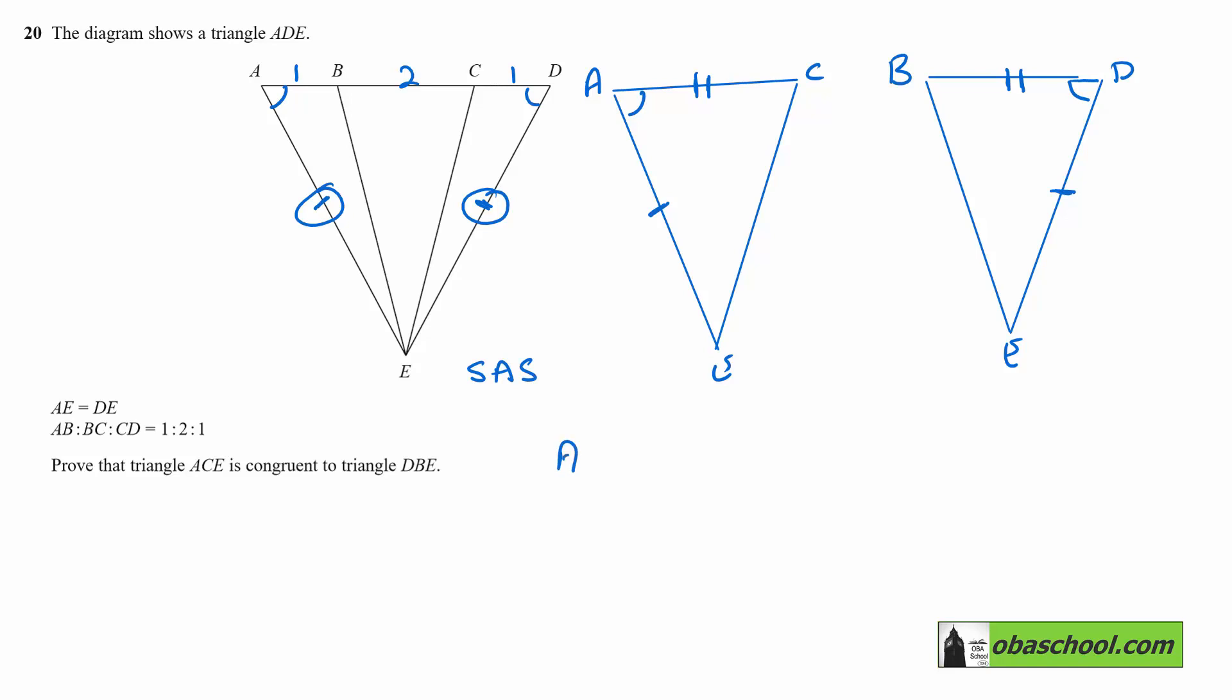So we can say AE is equal to DE. And that was given to us. We can say AC is equal to BD. And that's because of the ratios given.